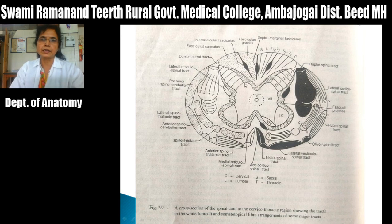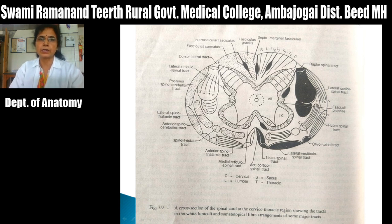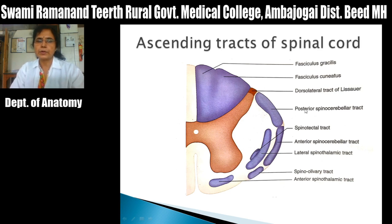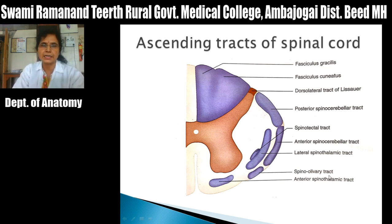Lamina 10 is present around the central canal. Peripherally in the spinal cord there is white matter, divided into three funiculi: posterior funiculus (also called posterior white column), lateral funiculus, and anterior funiculus. These funiculi are occupied by different ascending and descending tracts. In the posterior funiculus there is fasciculus gracilis, fasciculus cuneatus, and dorsolateral tract of Lissauer. In the lateral funiculus there are posterior spinocerebellar, anterior spinocerebellar, lateral spinothalamic, spinotectal, and spinoolivary tracts.